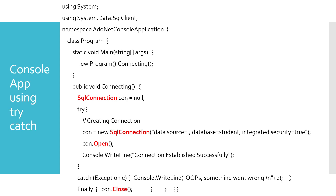Hey guys, welcome to RK Keynotes. In this video I'm going to show you how to perform database connection with a console application using Visual Studio .NET Framework. The database I'm going to use is Microsoft SQL Server, and the namespace I'm going to use is SqlClient. We're going to use ADO.NET here - ActiveX Data Object - which will help us to interact with the database and fetch the records.